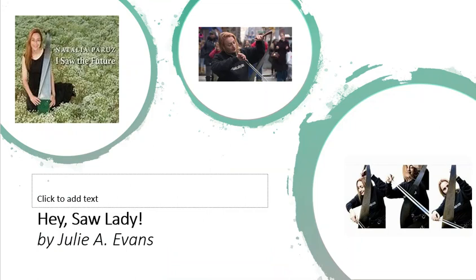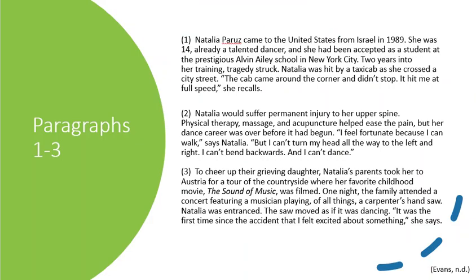Now we're going to read an article called 'Hey Saw Lady' by Julie A. Evans. Natalia Parouse came to the United States from Israel in 1989. She was 14, already a talented dancer, and she'd been accepted as a student at the prestigious Alvin Ailey School in New York City. Two years into her training, tragedy struck. Natalia was hit by a taxi cab as she crossed a city street. The cab came around the corner and didn't stop. 'It hit me at full speed,' she recalled. Natalia would suffer permanent injury to her upper spine. Physical therapy, massage, and acupuncture helped ease the pain, but her dance career was over before it had begun.